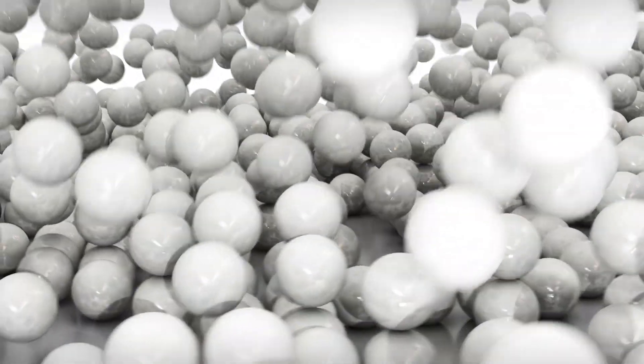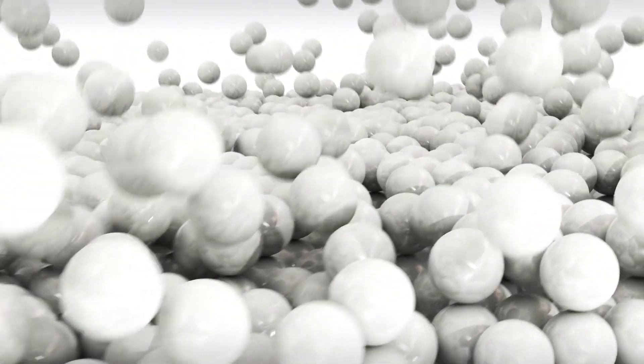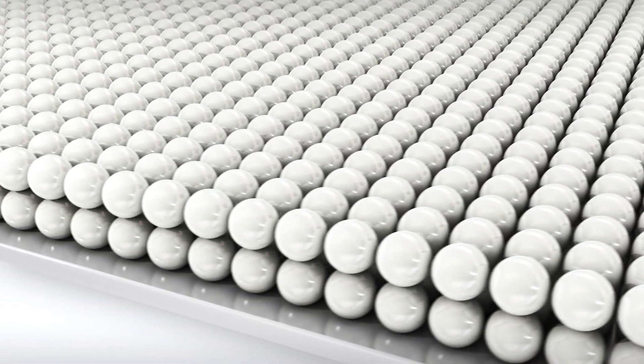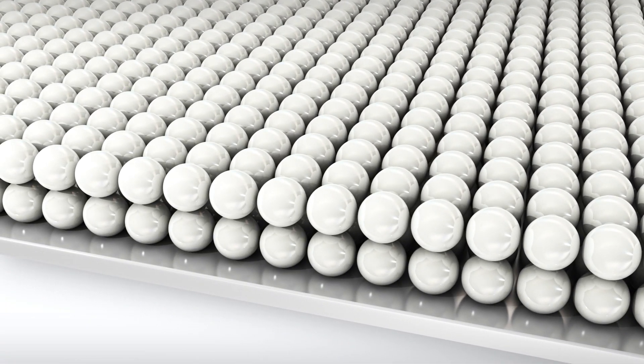Layer by layer, the ejected molybdenum atoms are deposited onto the glass substrate opposite the sputtering target. But let's go back to the target material.